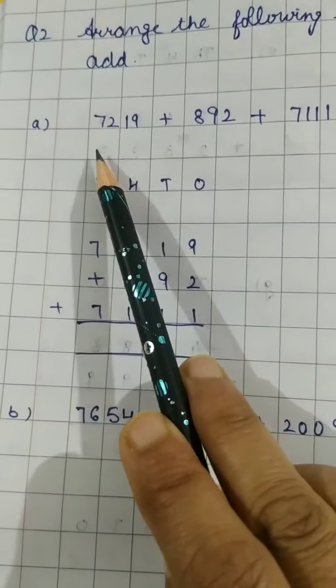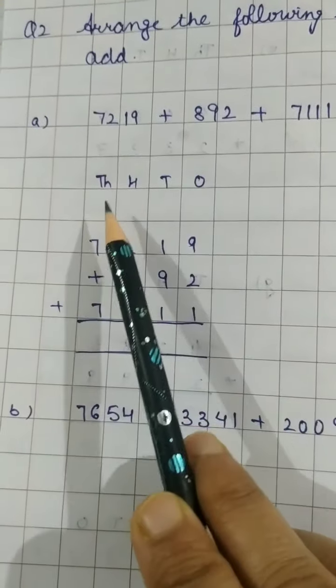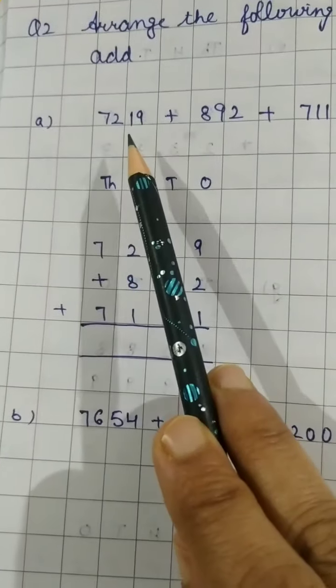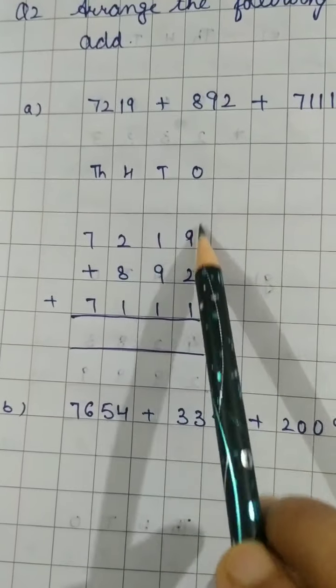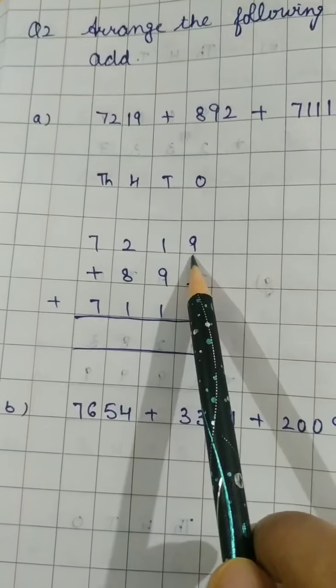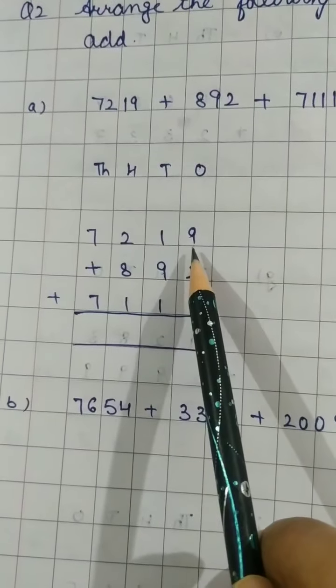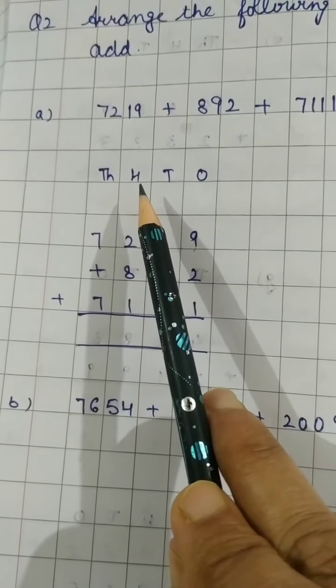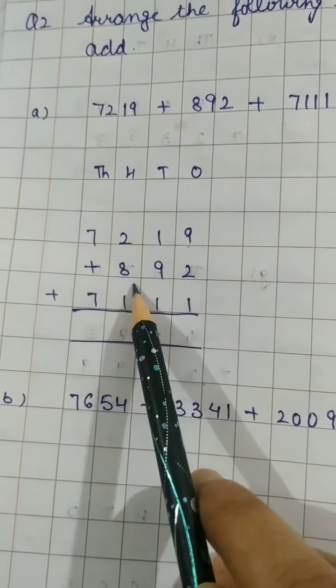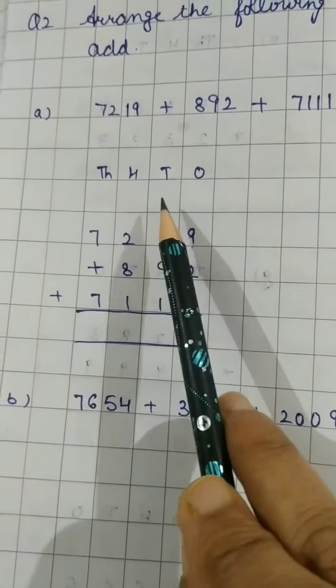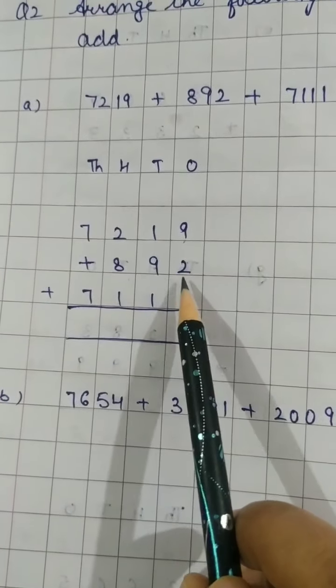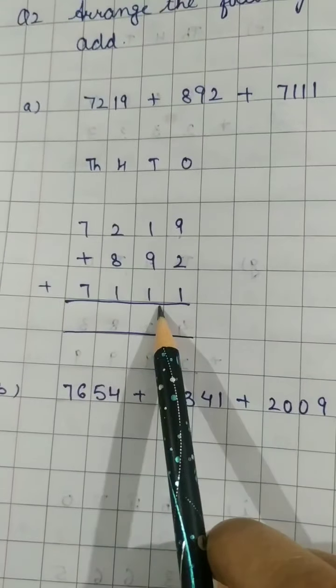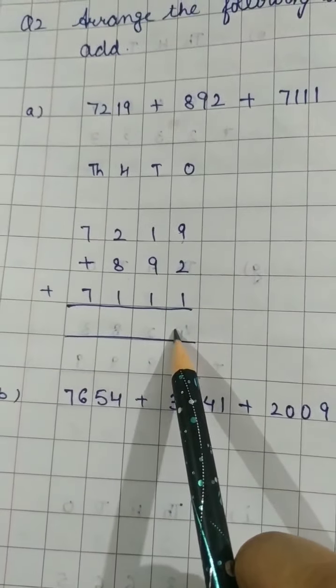Like it is 7219, so on thousand place seven will come, hundred place two will come, tens place one and then ones place nine. These are all the things you have done in chapter one. Then eight hundred and ninety-two. Eight hundred means eight will come in hundred place. Ninety-two means tens and ones place will be covered by nine and two respectively. Then 7111. Now you have to add this yourself.